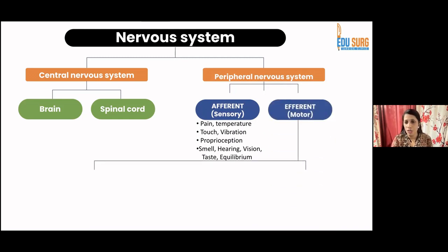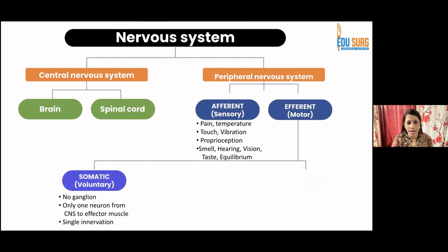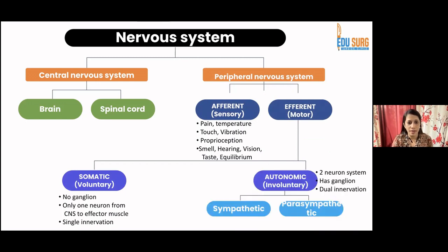On the other hand, the efferent or motor system has two components: the somatic, which is voluntary, and the autonomic, which is involuntary. The somatic has no ganglion — only one neuron from the CNS to the effector muscle and single innervation — while the autonomic, divided into parasympathetic and sympathetic, has a two-neuron system, has a ganglion, and has dual innervation.